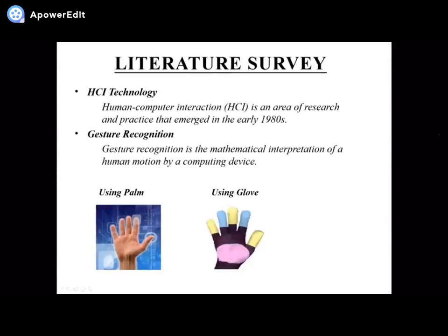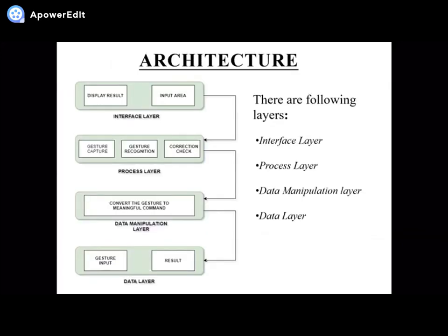Literature survey. HCI technology — human-computer interaction — is an area of research and practice that emerged in the early 1980s. Gesture recognition is the mathematical interpretation of human motion by a computing device. Using palm and using glove can be seen.